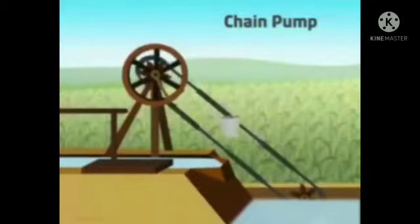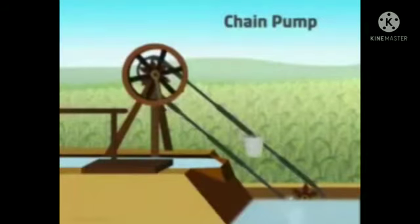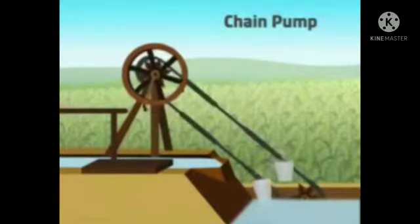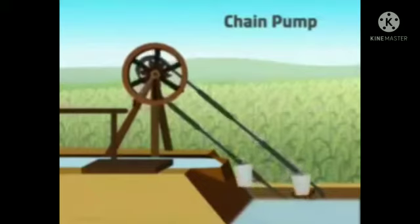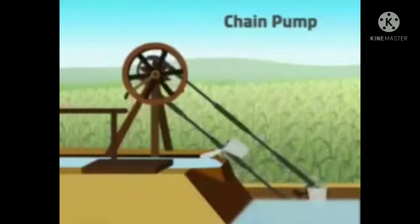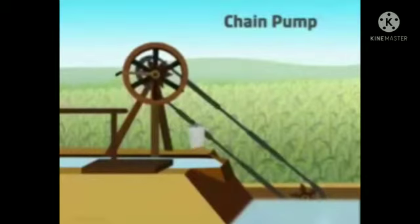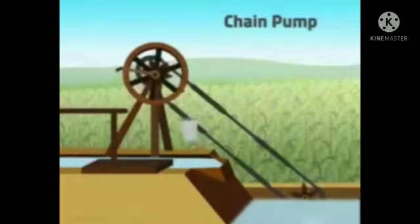This system has two wheels connected to a chain. One wheel is on the ground and the other is in the pond. A bucket is attached to the chain. When the handle of the upper wheel is rotated, the lower wheel also turns and water is filled in the bucket. This filled bucket of water moves up, which is used for irrigation.